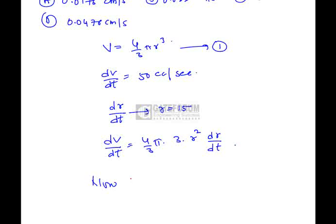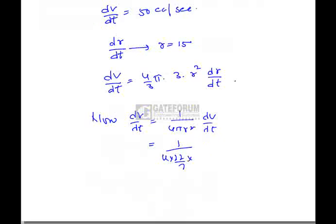Now dr by dt can be written as 1 by 4 pi r square into dv by dt. Let us substitute the values: 1 by 4 into 22 by 7, r is 15, so 15 square into 50. If we simplify, the value will be 0.0176 centimeters per second, which is option A.